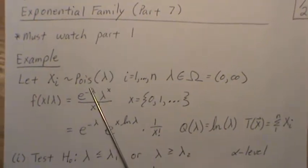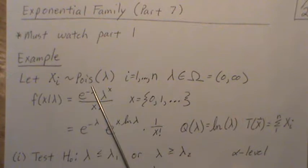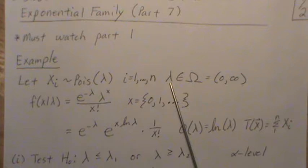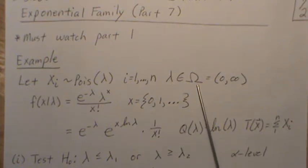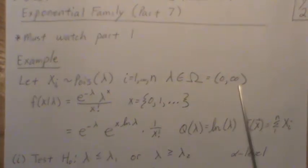We're going to let our data be Poisson distributed with parameter lambda. We're going to take a sample size n. Our parameter lives in the parameter space omega which is from 0 to infinity.